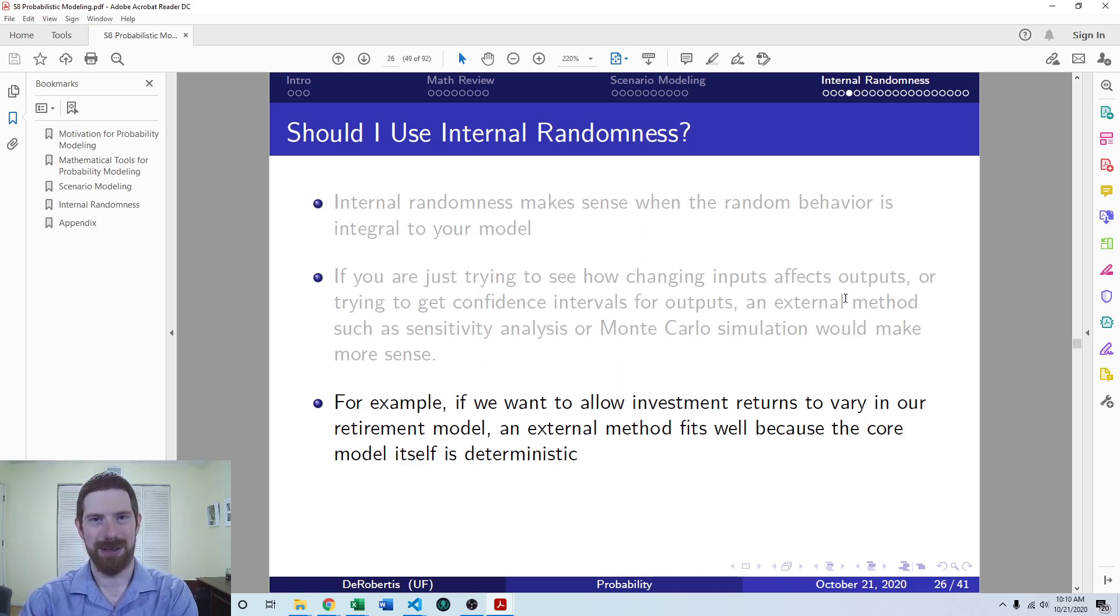And that brings up another point which is generally, if you want to go with internal randomness, you should think about this before you build the model and build it in as you create the model. It's typically more difficult to add internal randomness to an existing model than it is to build it from scratch the first time.